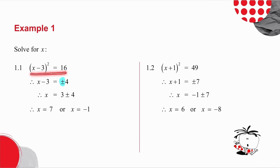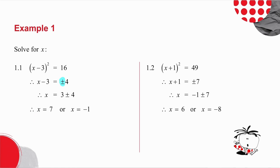That plus or minus 4 is vitally important. Remember, this equation has an x squared in it, so it's a quadratic equation, and a quadratic equation has two solutions. Watch out for that plus or minus 4. Taking the minus 3 to the other side, x equals 3 plus or minus 4 — so x is 7 or x is negative 1. There are my two solutions.